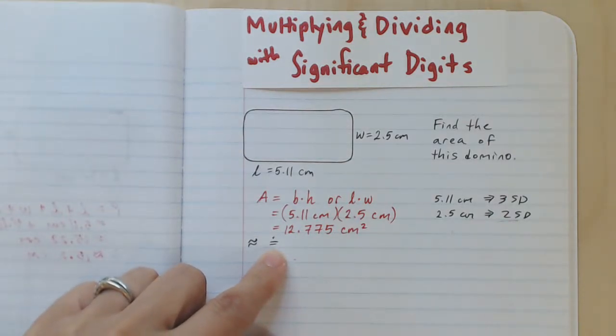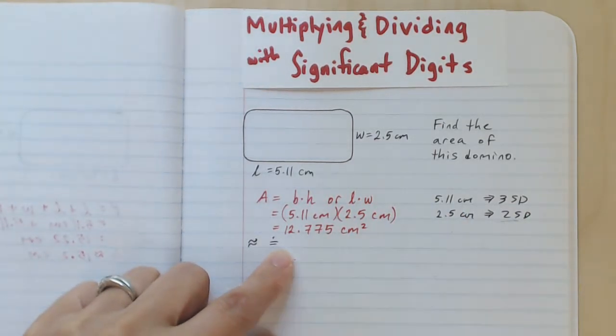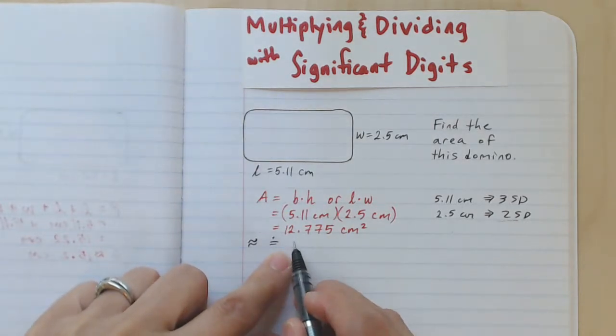We'll keep as many significant digits as the fewest number in the measured values. There are two significant digits in this measured value. That means we need two significant digits in our answer.